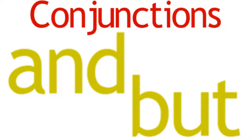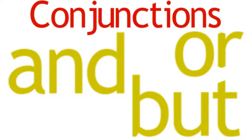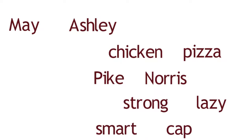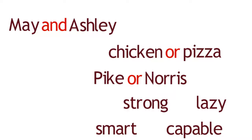The three most common conjunctions are and, but, and or. One common use of conjunctions is to join together pairs of words in a sentence. When a conjunction joins two nouns, the result is a noun phrase. And when a conjunction joins two adjectives, the result is an adjective phrase.